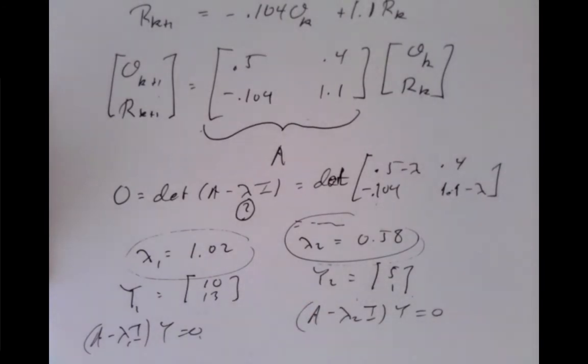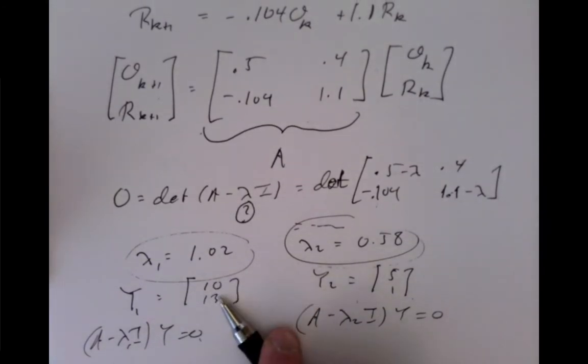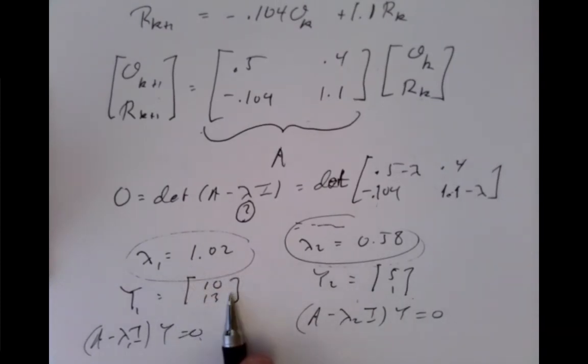So you'd expect, well, instead of 10 and 13, if it was, let's say, 10,000 and 13,000 owls and rats, then you'd expect it to go up by about 2% every month. And that's one sort of simple dynamics that could occur.